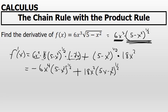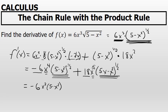Now look at the two terms and identify a common factor to bring out front. Between negative 6 and 18, factor out negative 6. Between x to the fourth and x squared, factor out x squared. Between 5 minus x squared to the negative one-half and 5 minus x squared to the positive one-half, factor out 5 minus x squared to the negative one-half, taking the lower power. So the greatest common factor is negative 6x squared times 5 minus x squared to the negative one-half.